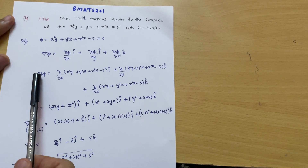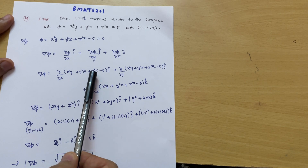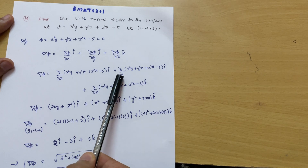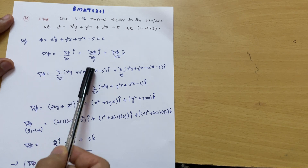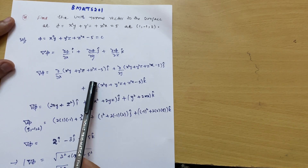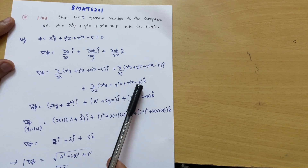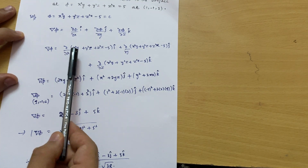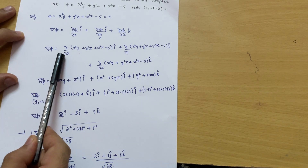So ∇φ = ∂/∂x (x²y + y²z + z²x − φ) î + ∂/∂y (x²y + y²z + z²x − φ) ĵ + ∂/∂z (x²y + y²z + z²x − φ) k̂.